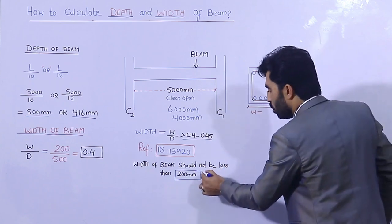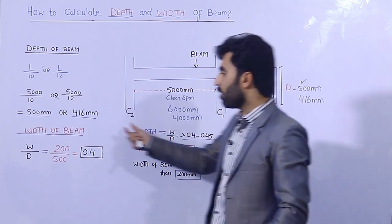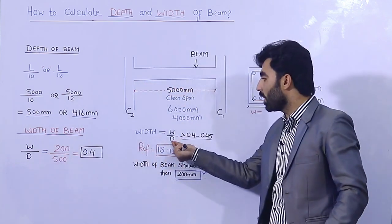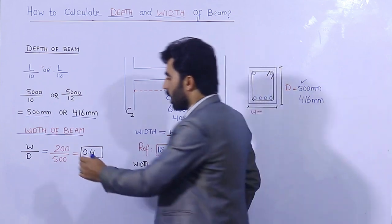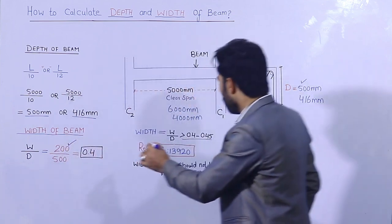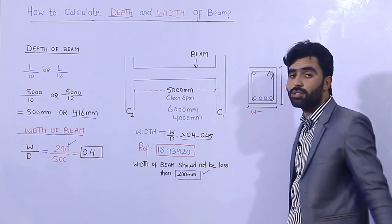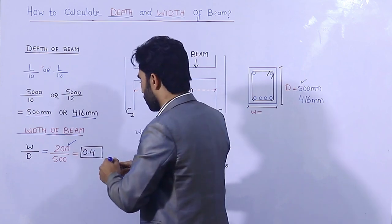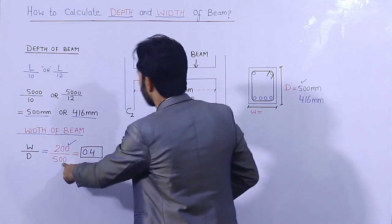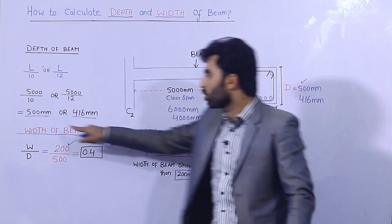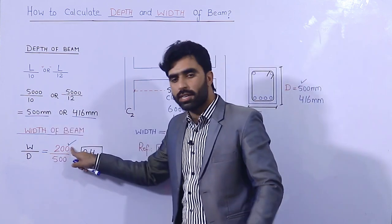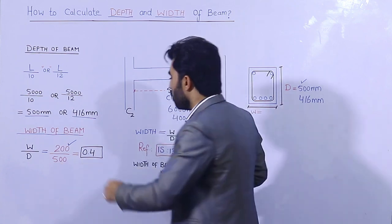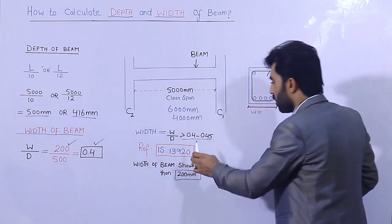So, using the formula width divided by depth: taking the minimum width of 200mm as per IS code, we get 200 divided by 500 — because the depth of the beam is 500mm — which equals 0.4.